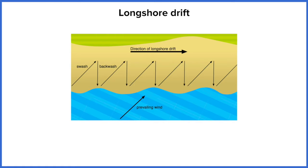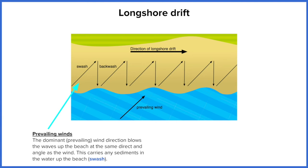So let's start off with the prevailing wind and the swash. The prevailing wind, which is represented by this big arrow in the south of the diagram, represents the general direction that the wind is blowing at that point on the coast. Wind direction can change day to day, but the prevailing wind is the dominant, main wind direction that occurs on the coastline.